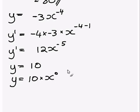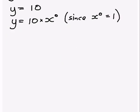we can write an x to the power 0 on that side, because since x to the power 0 equals 1, y equals 10 times x to the power 0 is just going to equal 10. So now we can use that same derivative rule, which we've used before.